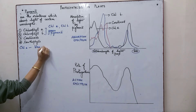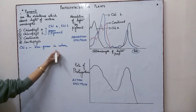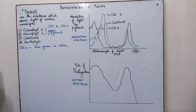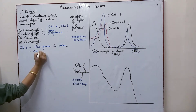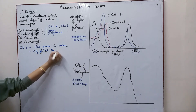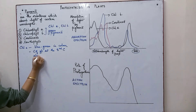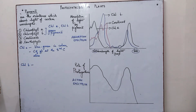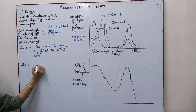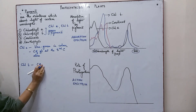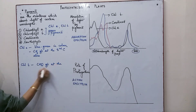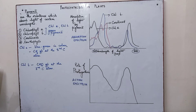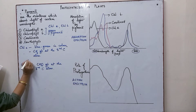Chlorophyll A is blue-green in color. It differs from chlorophyll B in having a methyl group at the third carbon atom. Chlorophyll B, on the other hand, has an aldehyde group — a CHO group — at the third carbon atom.